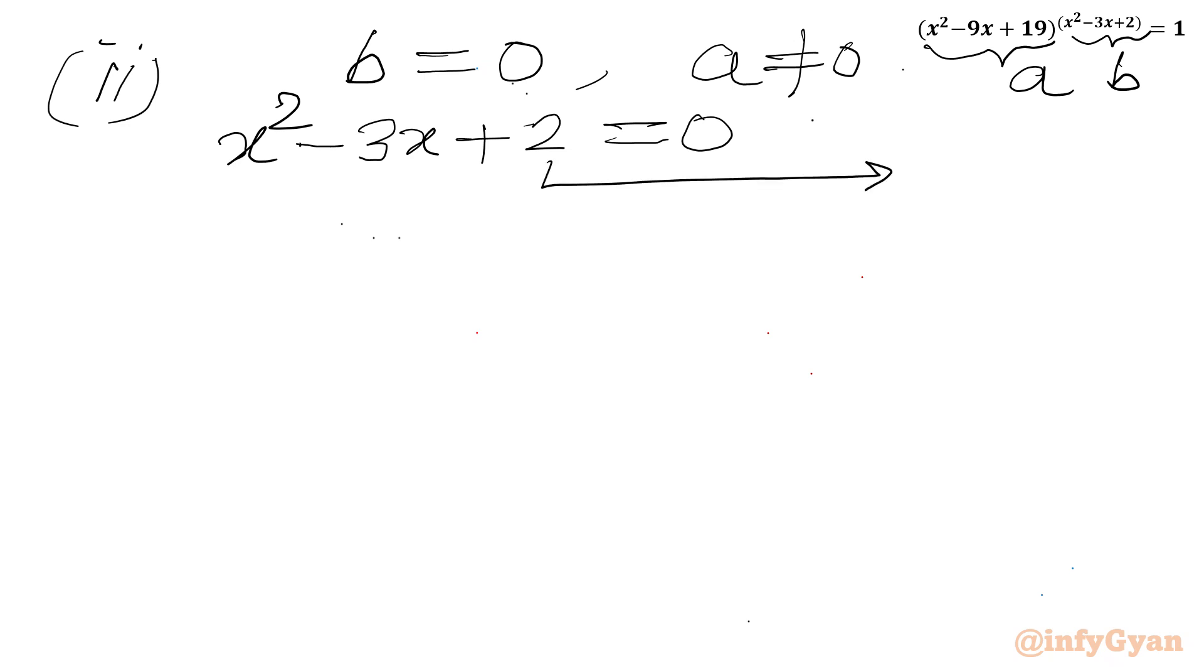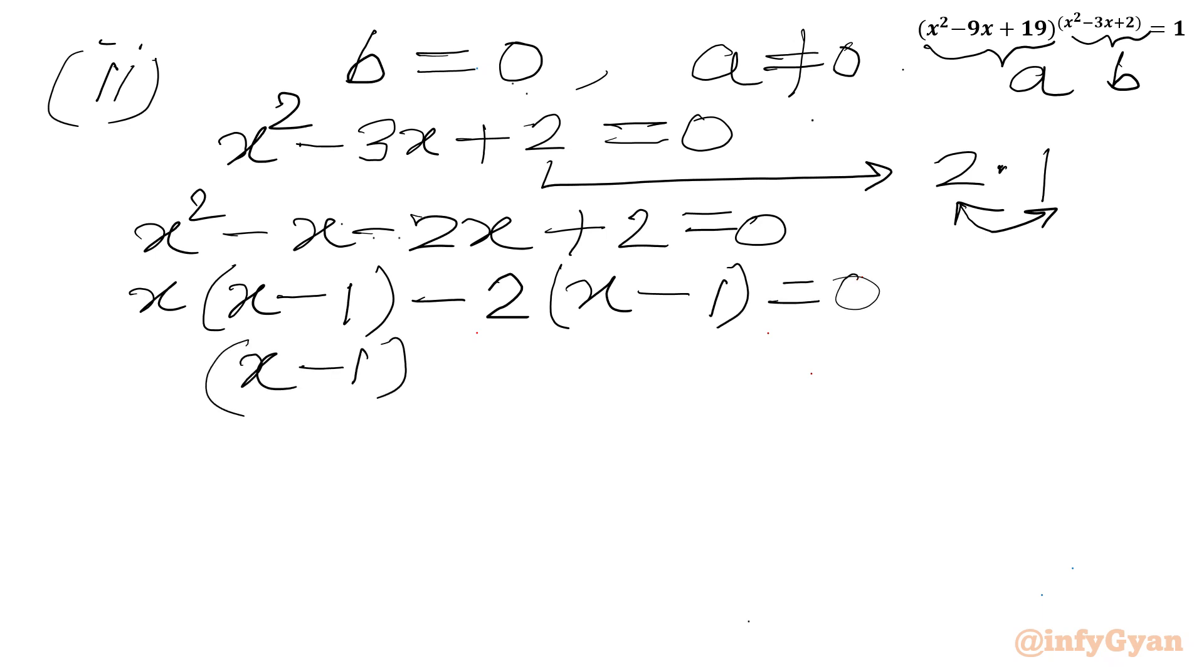Again we can find factors of 2. So 2 times 1, and if I will add both I will be getting 3. So I can split minus 3x as minus x minus 2x plus 2 equal to 0. From first 2 terms we can take x common, we will be getting x minus 1 in the bracket. From last 2 terms we can take minus 2 common out. In the bracket we will get x minus 1 equal to 0. So I can write x minus 1 times x minus 2 equal to 0. From product 0 rule we can write x will be equal to 1, x will be equal to 2.